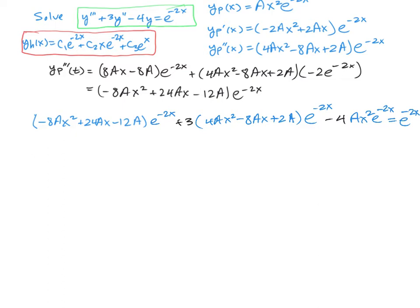Let's look at our terms. For x², we have negative 8a, then plus 12a, then minus 4a. Negative 8 plus 12 is 4, minus 4 is 0. So these x² terms cancel completely.